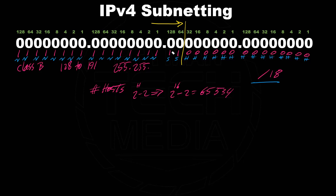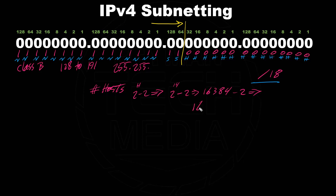Let's see how many available IP addresses we can have with /18. The number of hosts is 2 to the power of host bits minus 2, because the network address and broadcast address are reserved and we cannot use them. We have 8 bits in the third octet area plus 6 remaining bits — wait, 8 bits here plus 6 bits here, which is 14, giving us 16,384 minus 2 equals 16,382 available IP addresses per subnet. Originally it was one big subnet with 65,534 available IP addresses.